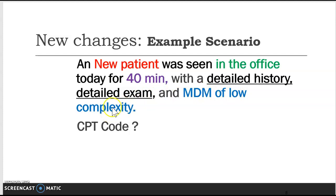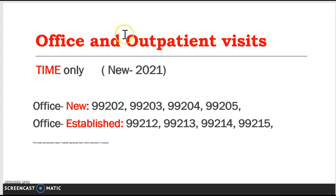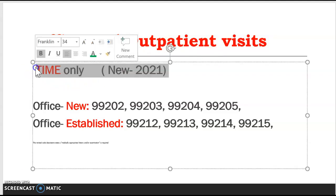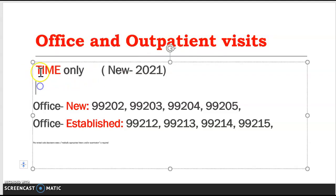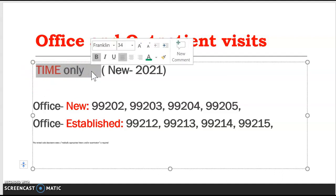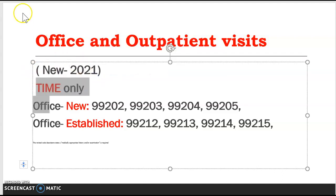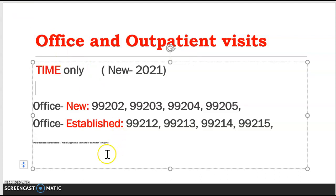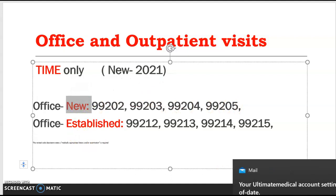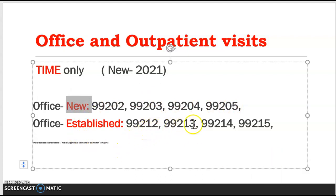How do I start? The key change for office and outpatient visits is that we only code for time now. The only thing we need from the documentation is the time. Office visits for new patients start with codes 99202, 99203, 99204, 99205, and established patients start with 99212, 99213, 99214, 99215.